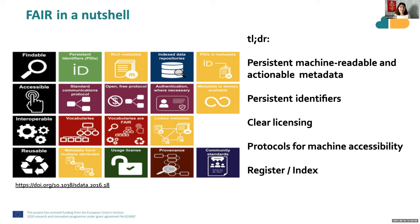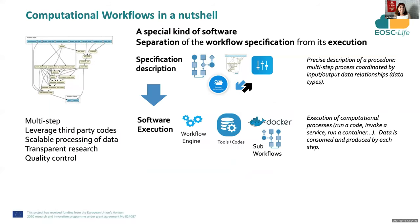I've just got a couple of slides here to get everybody onto the same page about FAIR. Everyone can recite FAIR off by heart now, I'm sure. But the TLDR is that persistent machine-readable and actionable metadata is actually the key thing behind FAIR — persistent identifiers, clear licensing, protocols for machine accessibility, and the ability to register and index data originally and workflows in this particular case.